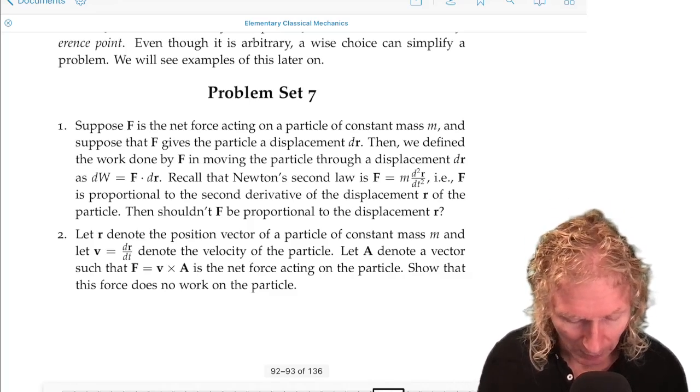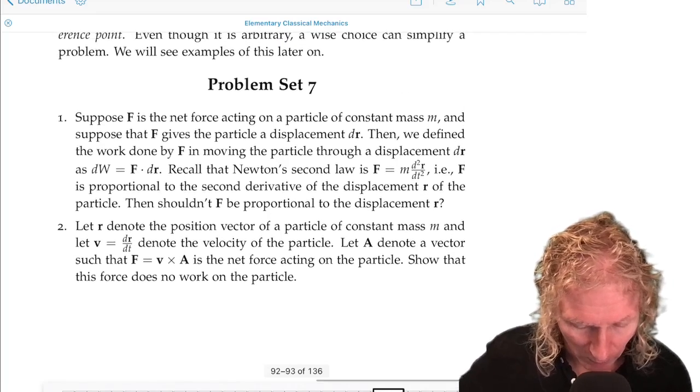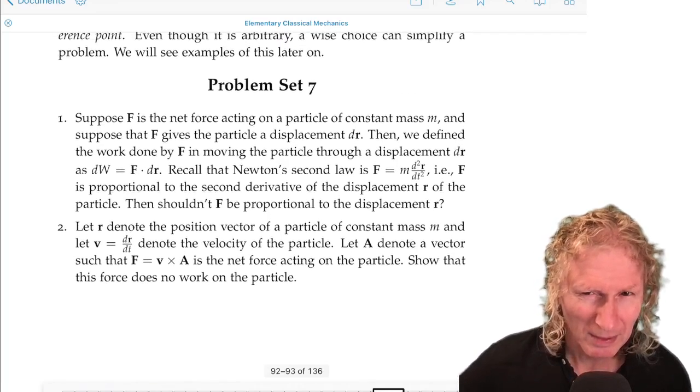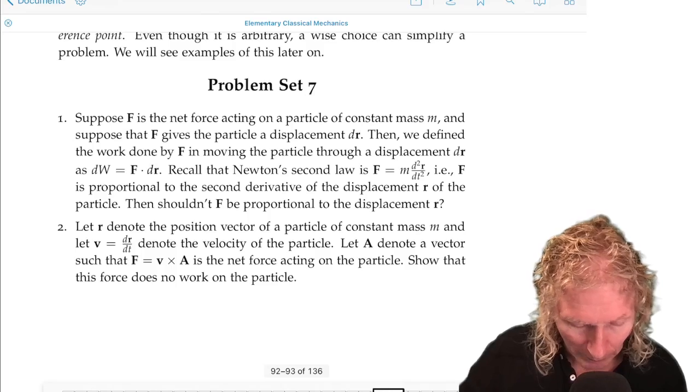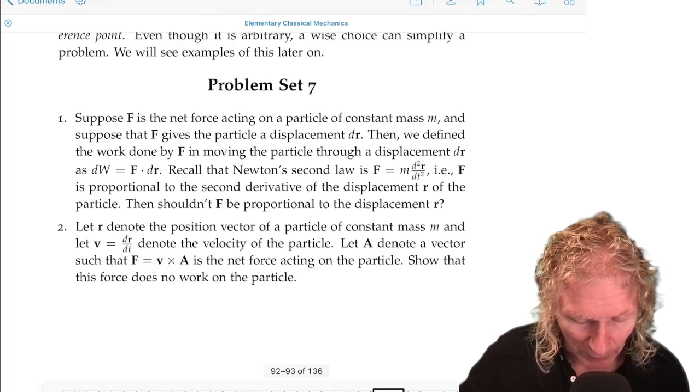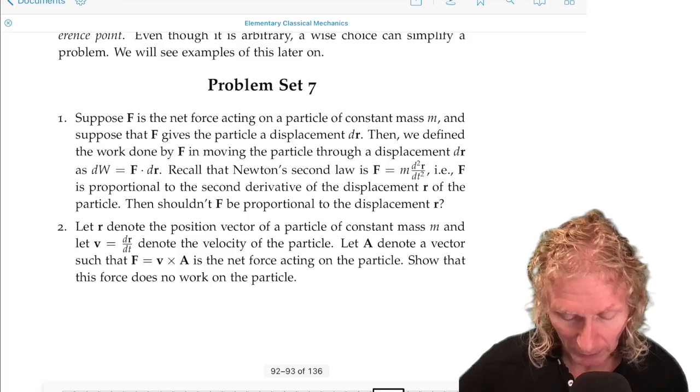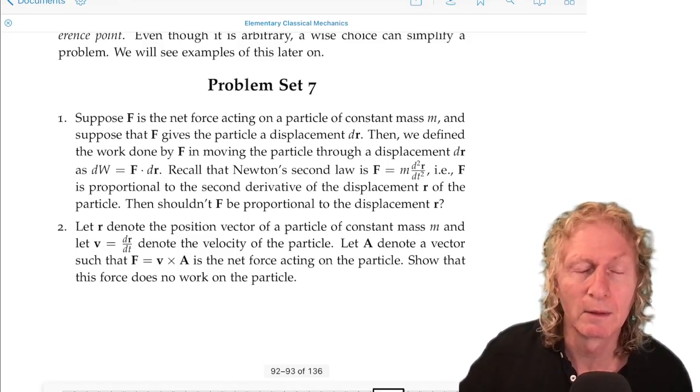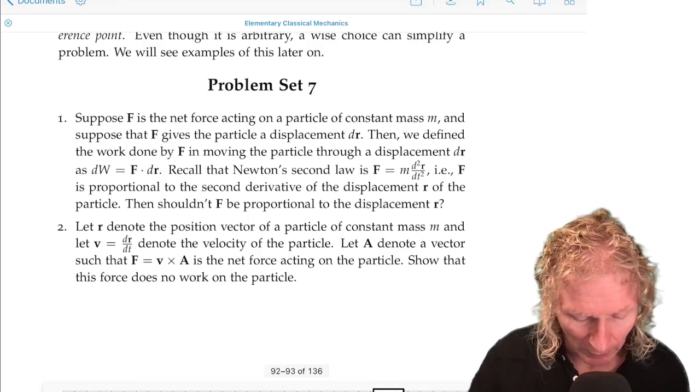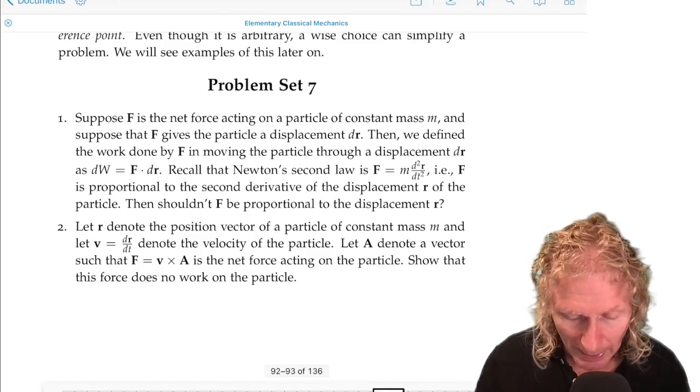The next problem is a kind of a particular example that gives you a little insight into one. So r is a position vector of a particle of constant mass m, and v denotes a velocity, the derivative of the position vector with respect to time. Now let a